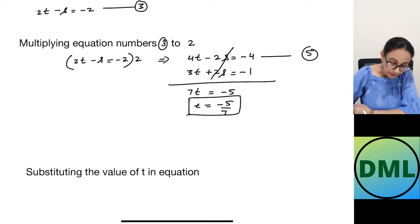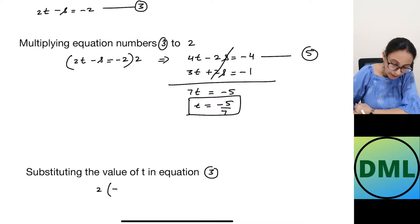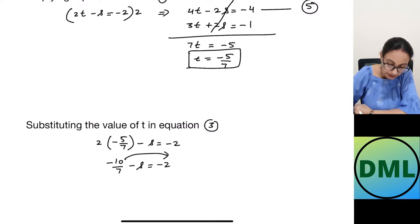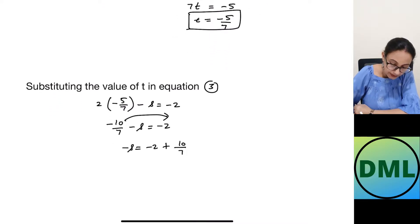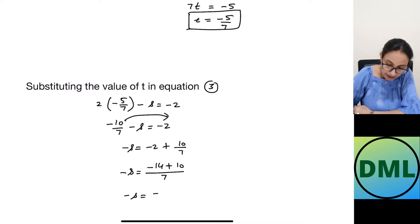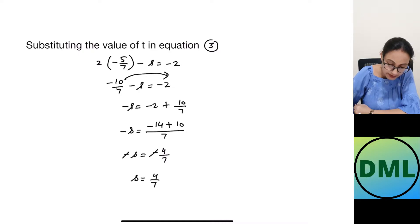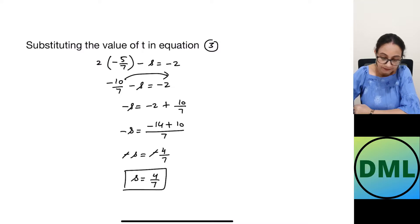Substituting t = −5/7 into equation 3: 2(−5/7) − s = −2, so −10/7 − s = −2. Moving −10/7 to the right: −s = −2 + 10/7. Taking LCM: −s = (−14 + 10)/7 = −4/7. The negatives cancel, giving s = 4/7.